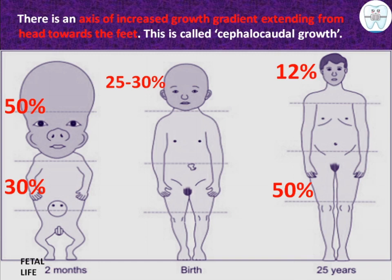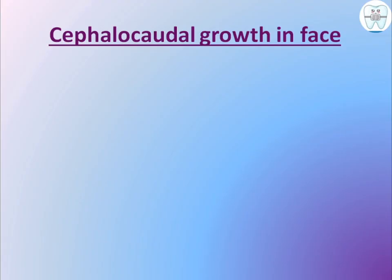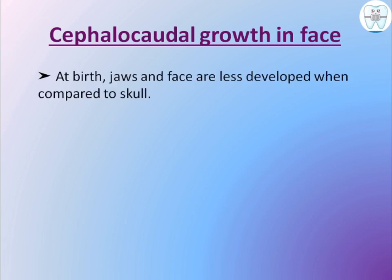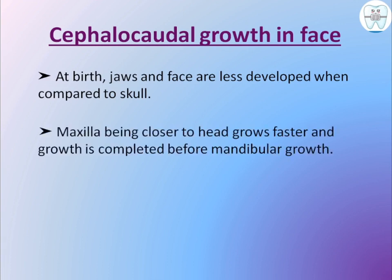Looking at growth in the face: at birth, the jaws and face are less developed compared to the skull. The maxilla, being closer to the head, grows faster and its growth is completed before that of the mandible.